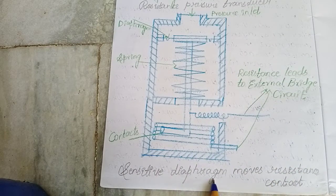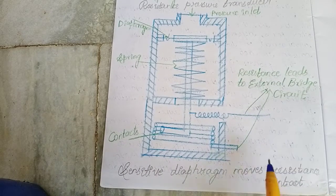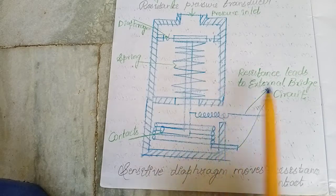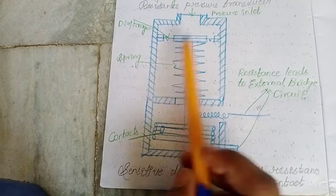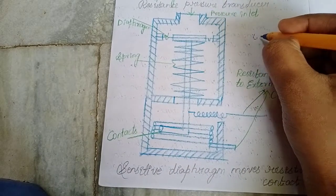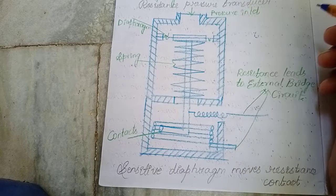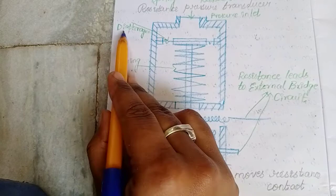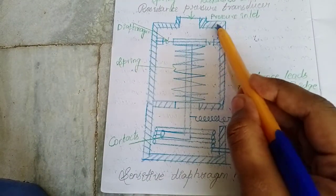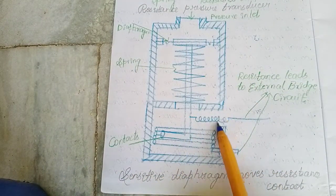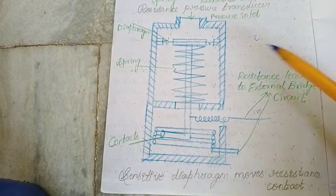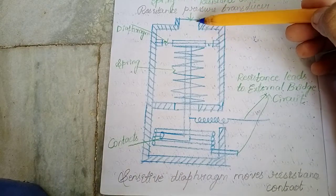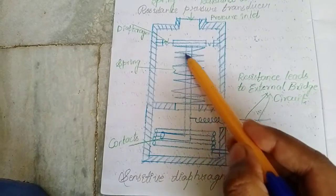This is the sensitive diaphragm type, which moves the resistance contact. This is another type of resistive pressure transducer, which uses diaphragms. The diaphragm is the hook-like element shown here. It is kept in a glass jar, and there is a pressure inlet. From the inlet, we give the input pressure. There is a spring here as well.